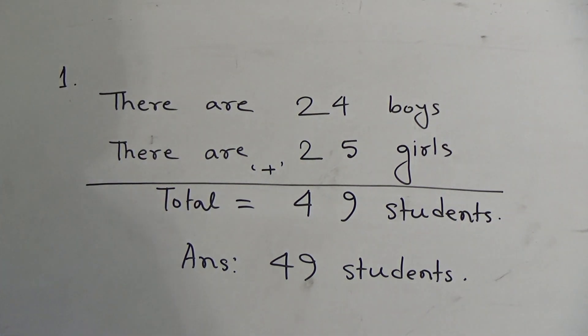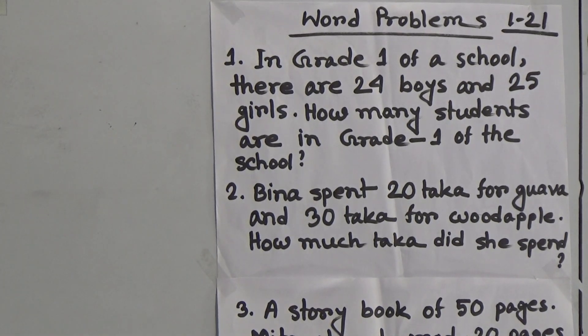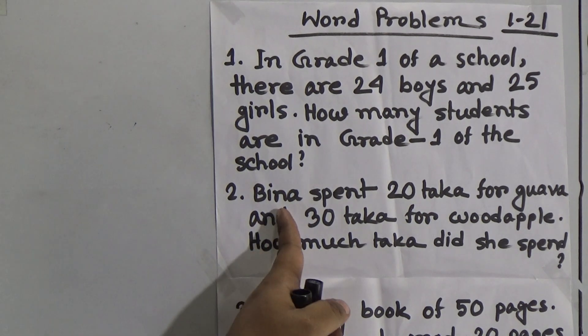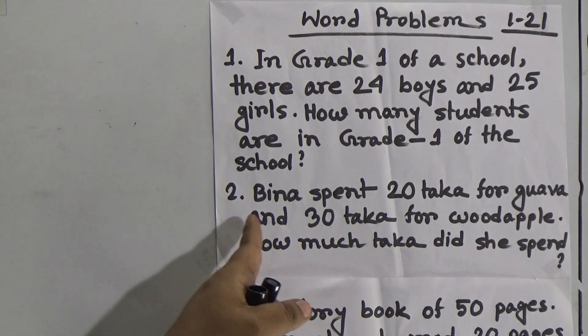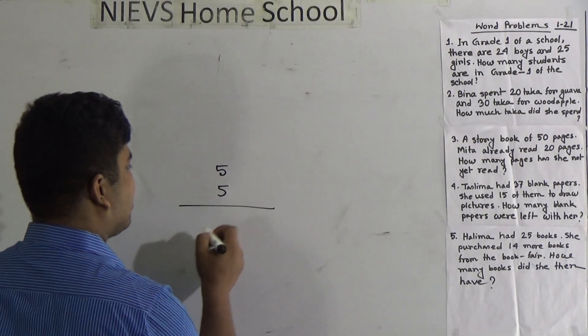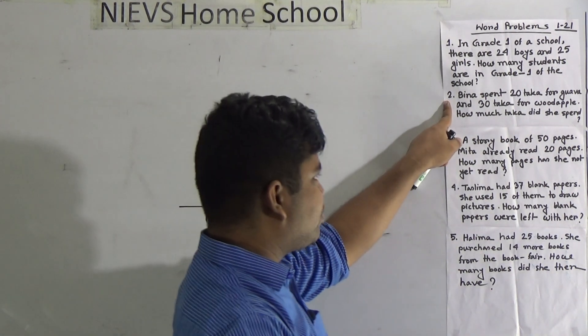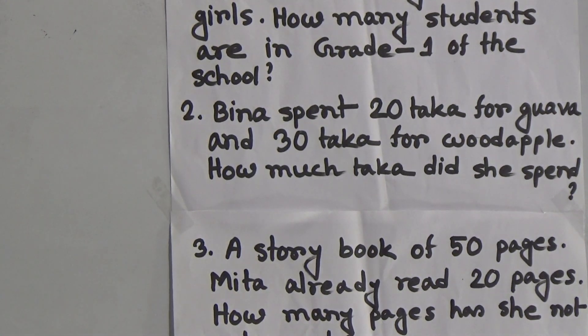Number one is done. Now we shall solve question number two. First of all, we read the question, then make a plan, and finally start to solve. Bina spent 20 taka for guava and 30 taka for udapil. How much taka did she spend? Suppose you went to a market and bought a pen for five taka and a pencil for five taka — you do addition: five plus five equals ten taka. Just like this, we do addition for question two.